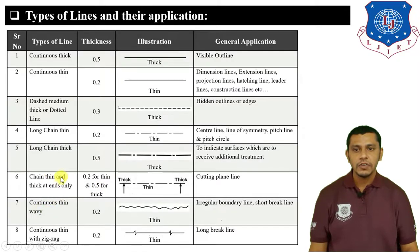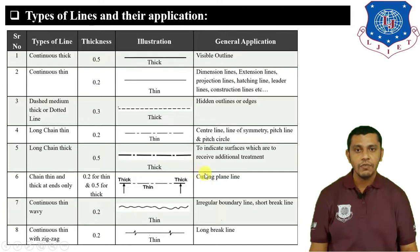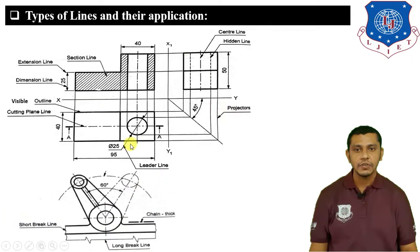Next is the continuous thin and thick at ends line. It is also a chain line but thick at the ends — the ends are 0.5 mm in thickness and the other parts are 0.2 mm. It is used to show cutting plane lines. When taking a section using a cutting plane, we use this line to show where the cutting plane is. In the figure, the section is taken from a particular location and the cutting plane is shown using this line.